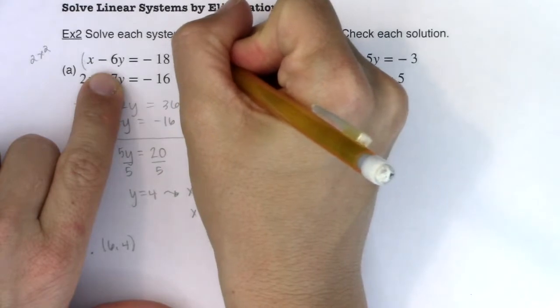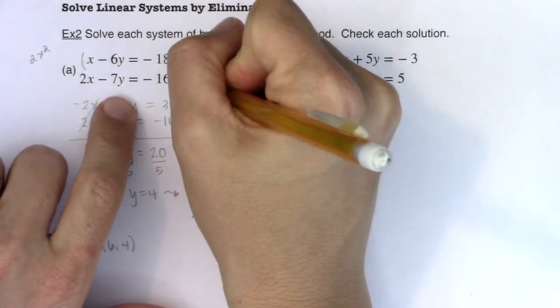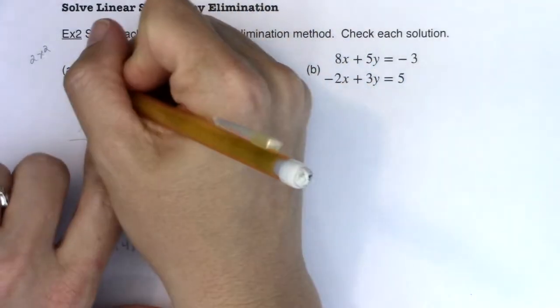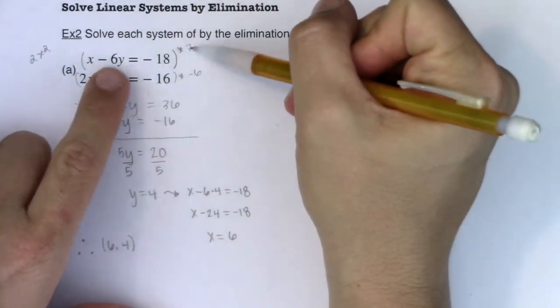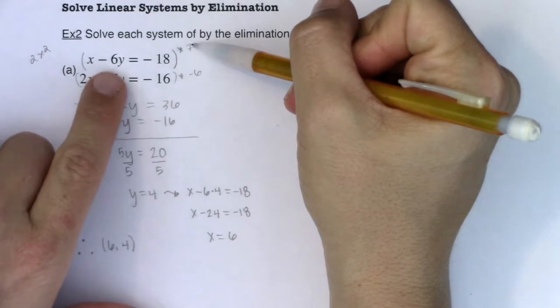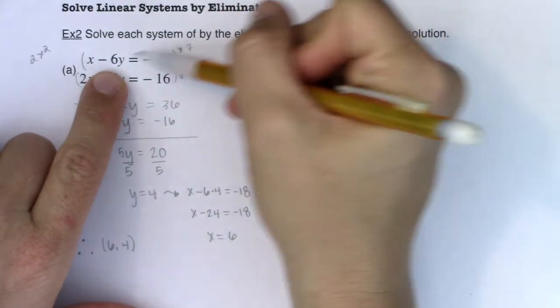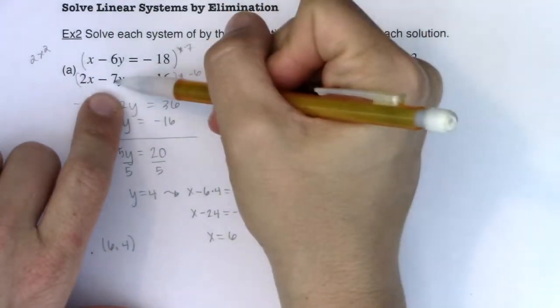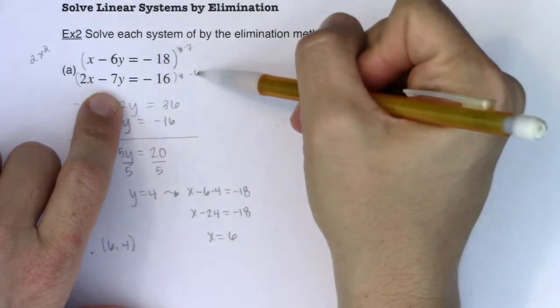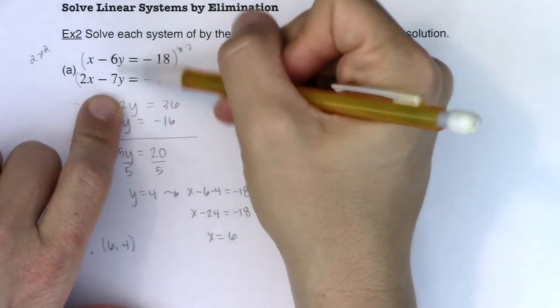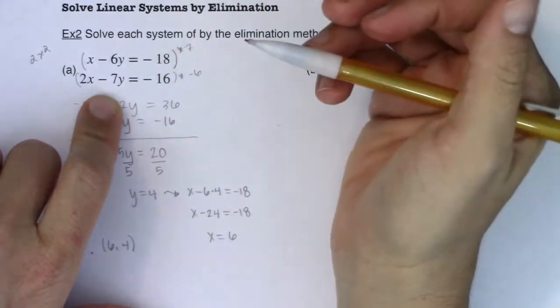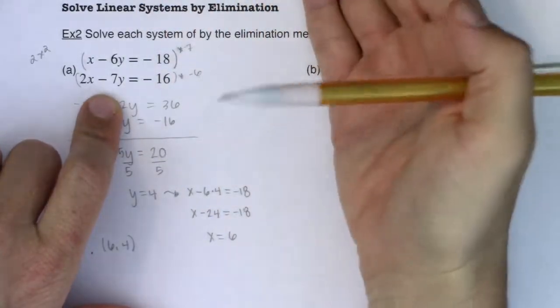I could have multiplied this equation by 7 and then this one by negative 6. And I'll erase this in a little bit because that's not what this work is showing. But imagine I multiplied this by 7. I would have negative 42y here and I would have positive 42y here. And as long as I have my y variables that have the same number in front of them but opposite signs, then that variable can be eliminated.